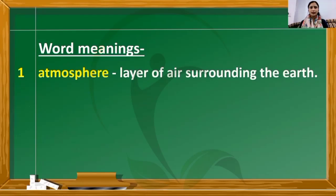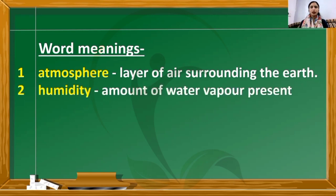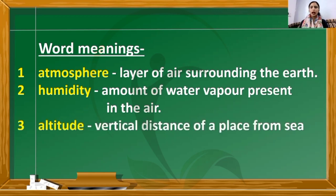The first word meaning is atmosphere. Atmosphere is a layer of air surrounding the earth. Write down quickly: atmosphere — layer of air surrounding the earth. Second: humidity is the amount of water vapor present in the air.